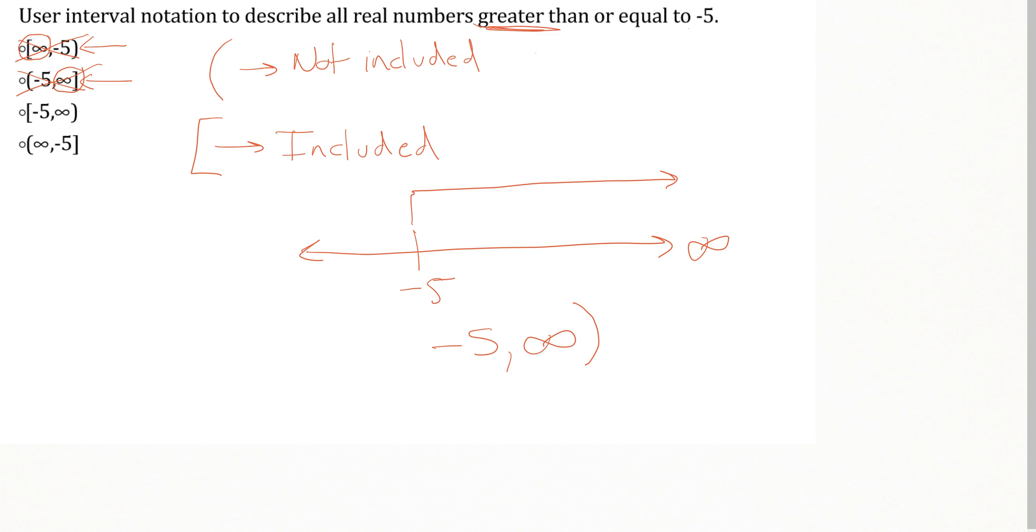Because this problem says it's greater than or equal to, that means the equal to piece is telling us that we want to include the negative 5 in our answer. So in this situation, we'd be looking at a bracket for our negative 5 on this side. So this would be negative 5 to infinity, or all real numbers greater than or equal to negative 5.